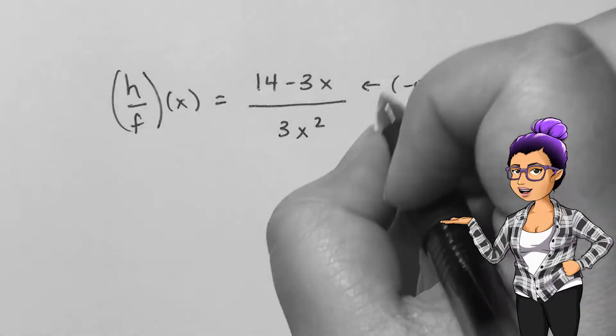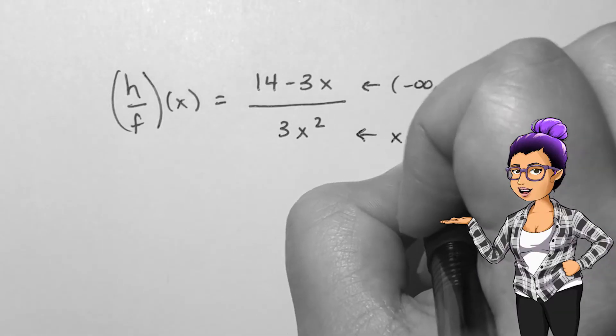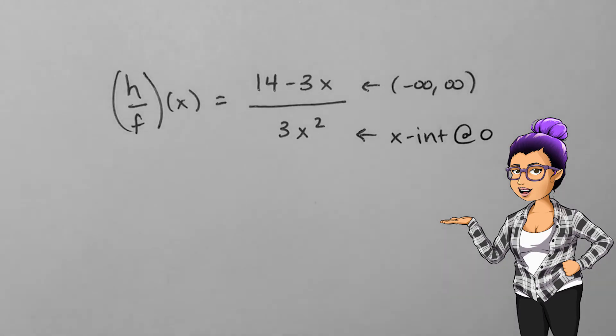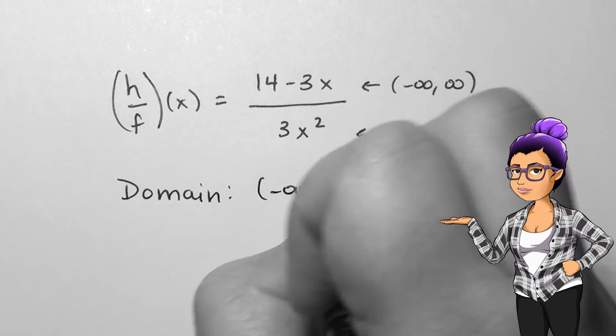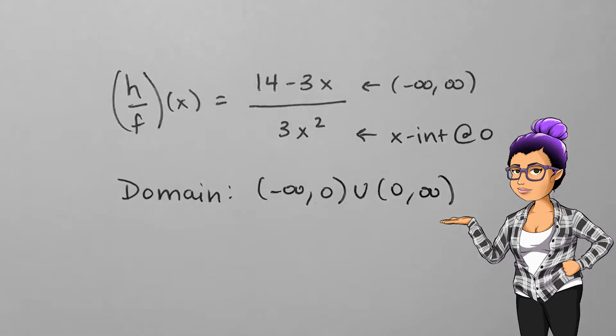In this example, h of x has domain of all real numbers, as does f of x, but f of x also has an x intercept at 0, so the domain of the entire division will be all real numbers except 0.